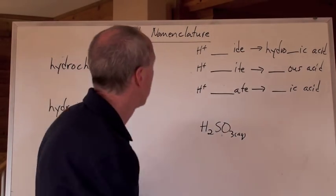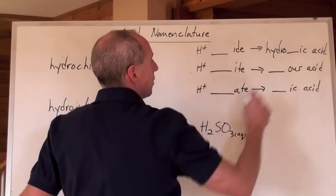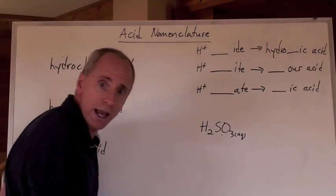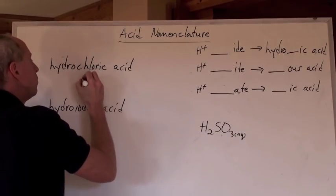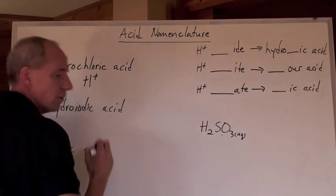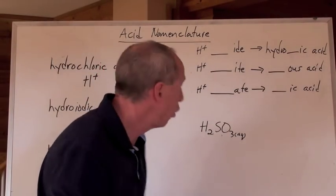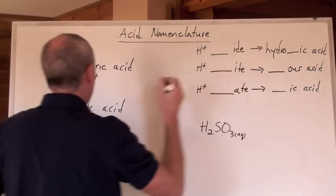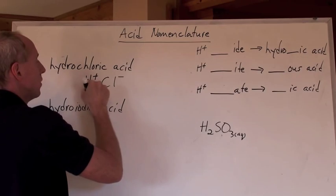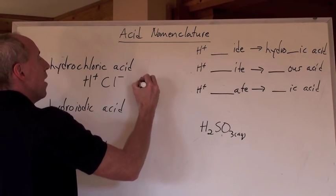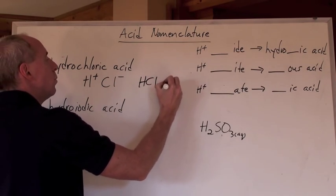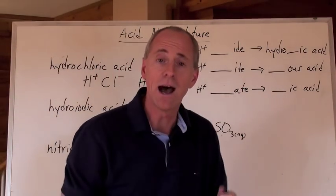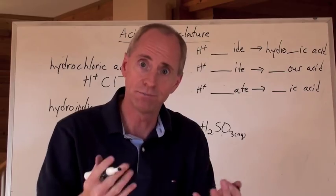The '-ides' become 'hydro-blank-ic acid.' So, for instance, if somebody says put together hydrochloric acid — you always put H-positive in an acid. Hydrochloric acid is hydrogen with blank-ic, so it's chloride, so it's H-positive and Cl-negative, and that's HCl. Always put AQ. So HCl(aq) is how you write the formula for hydrochloric acid.